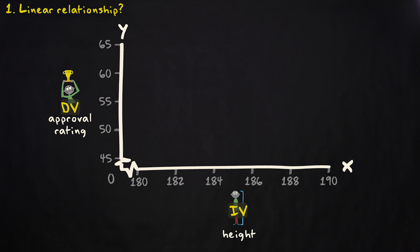Obama is 185 cm tall and has an approval rating of 47, so he should be positioned here. Bush Jr. has a physical height of 182 cm and an average approval rating of 49.9, so we position him here. Clinton and Bush Sr. are located here.